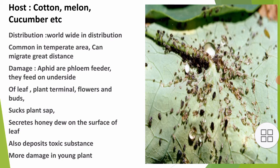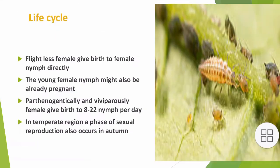Aphids are phloem feeders; they feed on the underside of leaves, plant terminals, flowers, and buds. They suck plant sap and secrete honeydew on the surface of leaves, and also deposit toxic substances. More damage is done to young plants. You can see in the picture how the leaf of the cotton plant is affected on the underside.